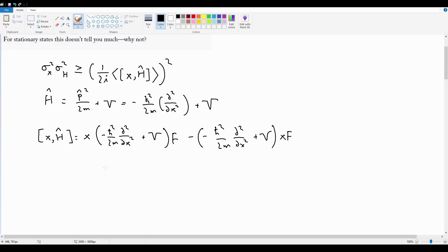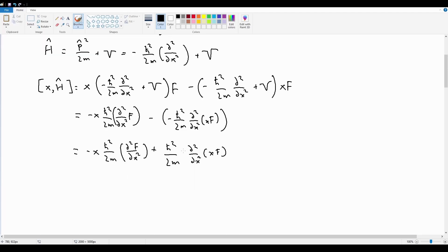Subtracted by negative h-bar squared over 2m times d2 by dx squared plus V, acting on x f. So immediately what I see is that the V term with this V term cancels, because that's just distributive. So what we have next is negative x h-bar squared over 2m d2 by dx squared, acting on x f.